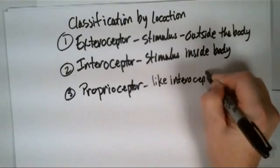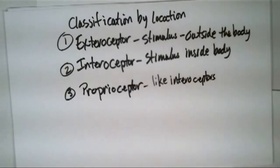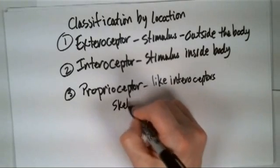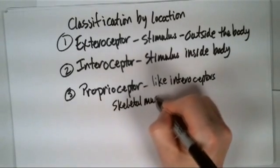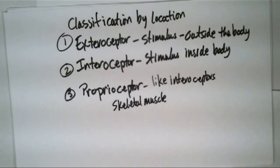But they're really only found in very specific places in the body, and those things would be skeletal muscle, you might find it in a tendon or joint, ligaments, connective tissues on bones. Some people include the equilibrium receptors that you find in the vestibulocochlear.